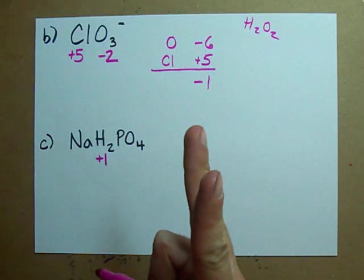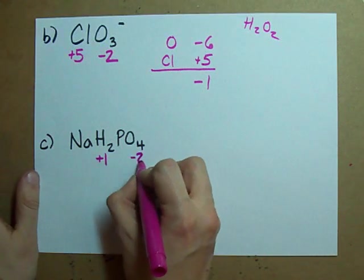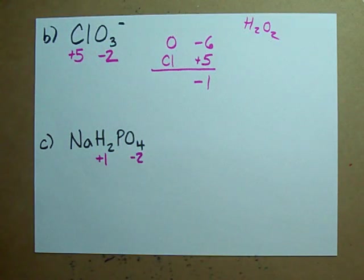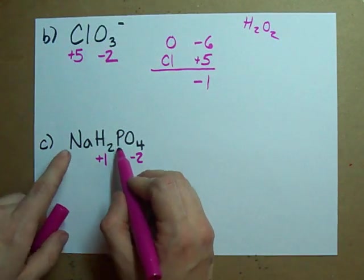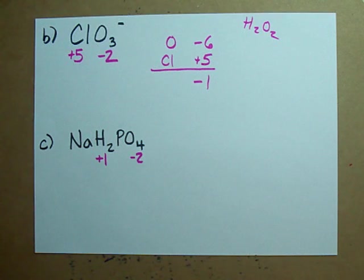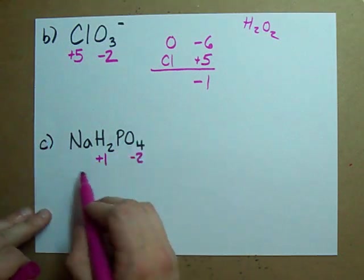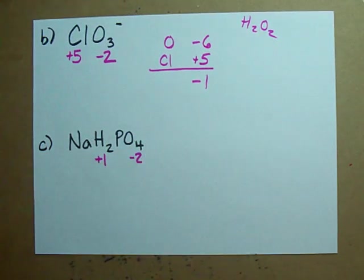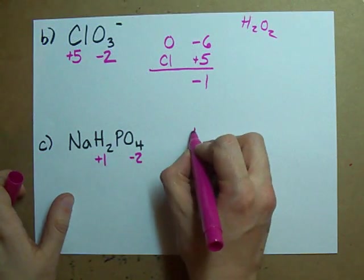Oxygen's always minus two, so each of these must be minus two. Now we have to assign oxidation numbers, preferably whatever charge these atoms prefer, so that the total charge on the molecule is zero.